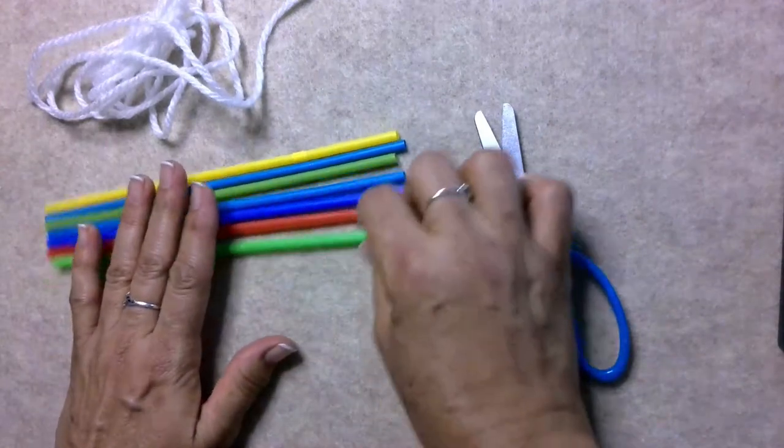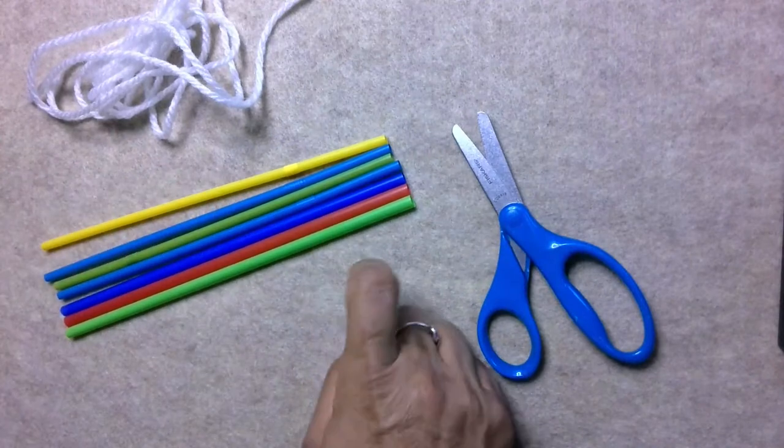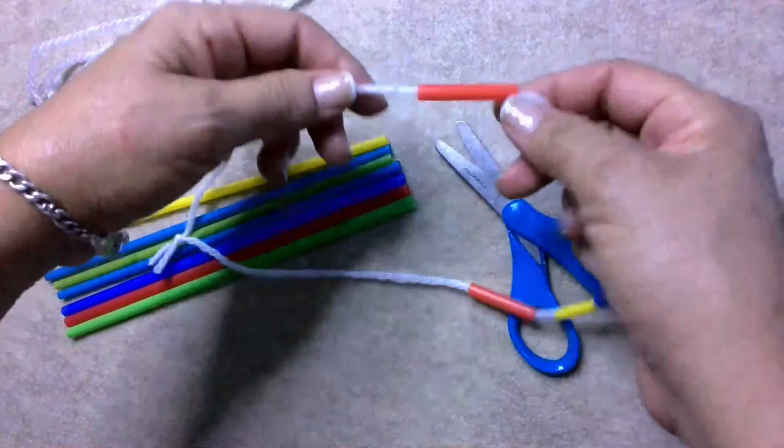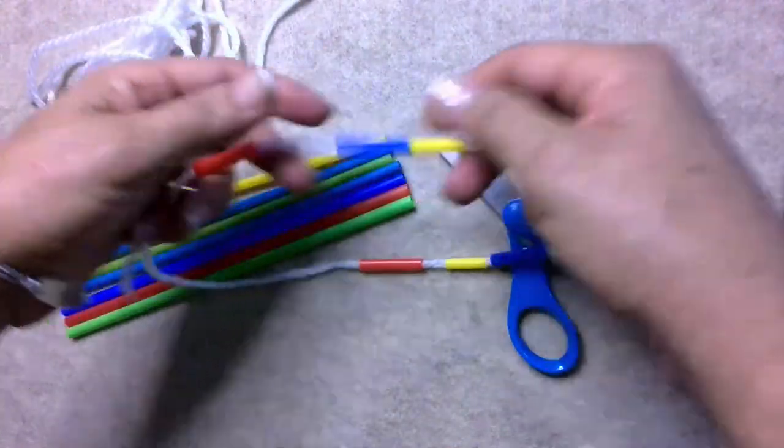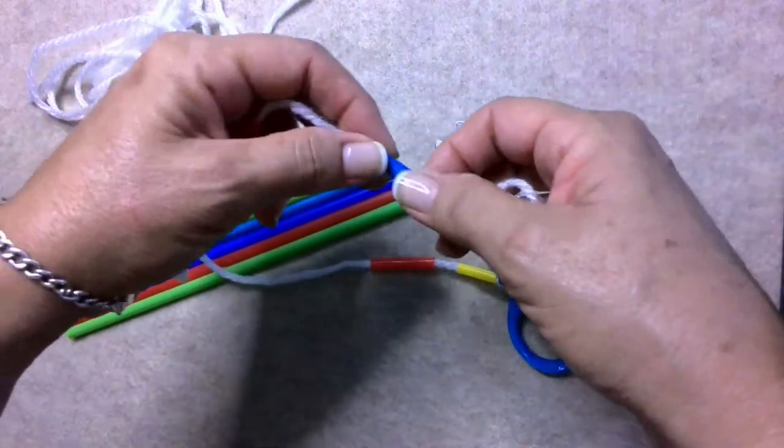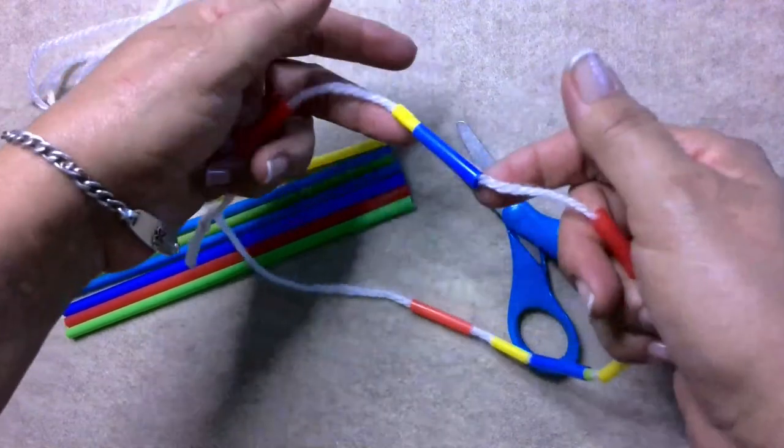One thing I want to bring to your attention is that for my sample, I used some straws that were wider than others, and if that is the case, they tend to kind of get lost inside the wider ones. The thinner ones get lost inside the wider ones.